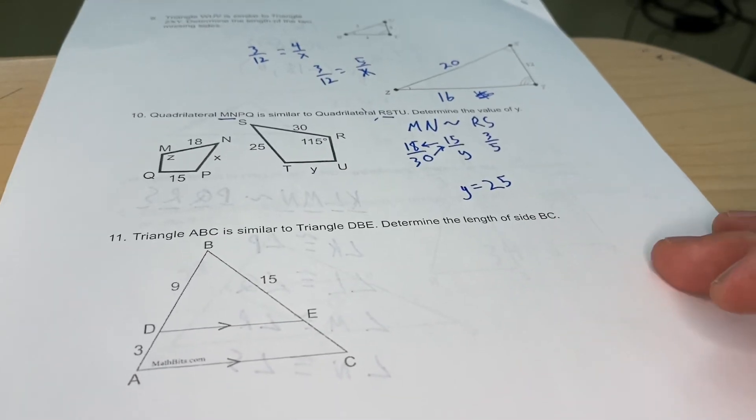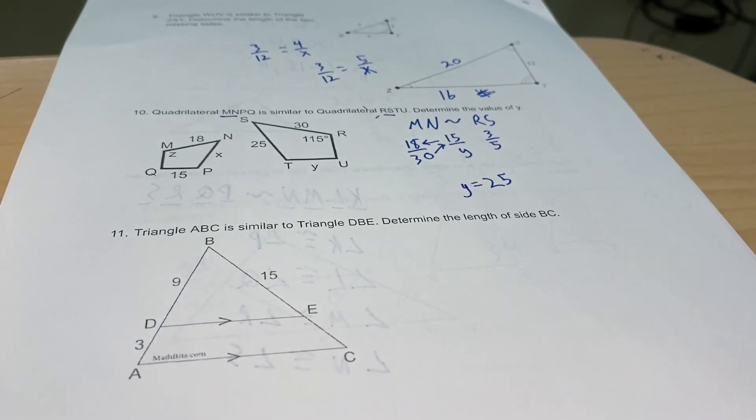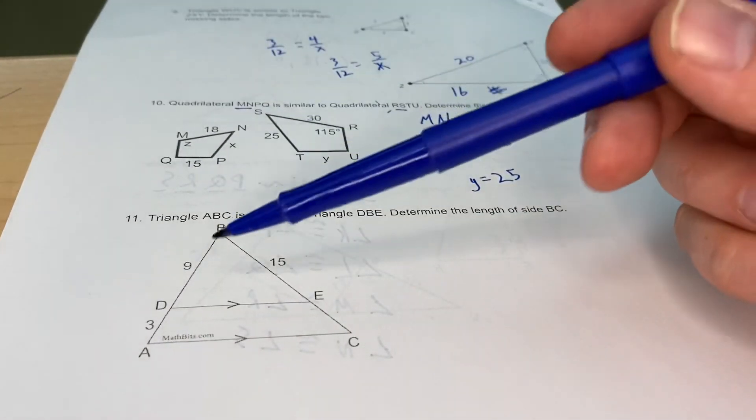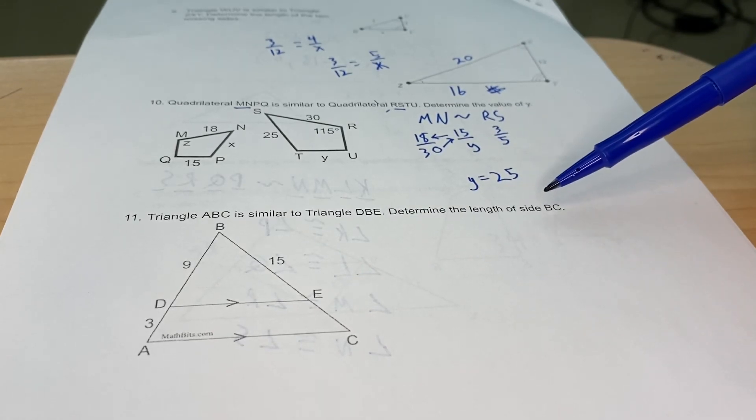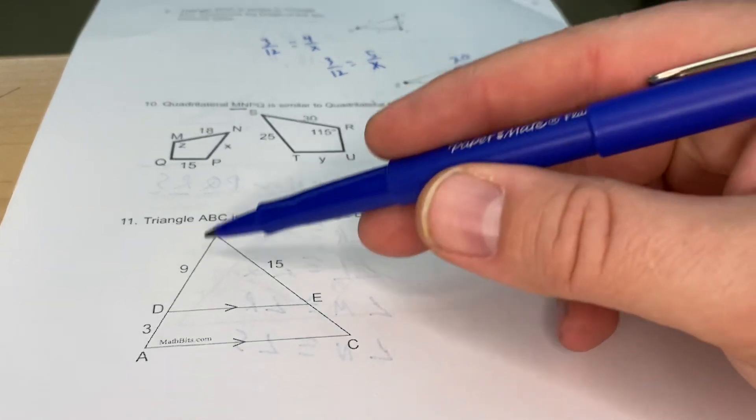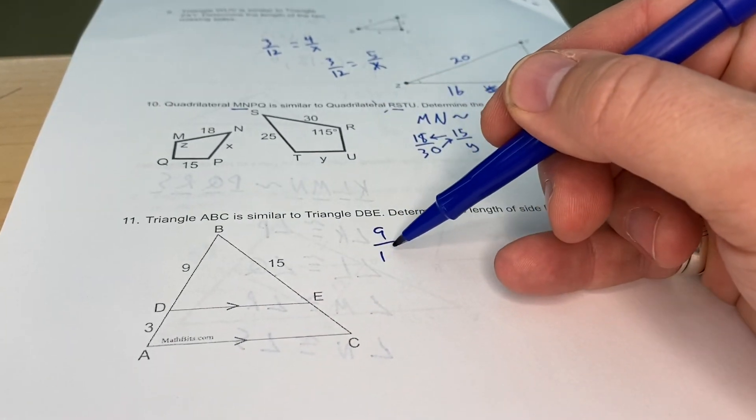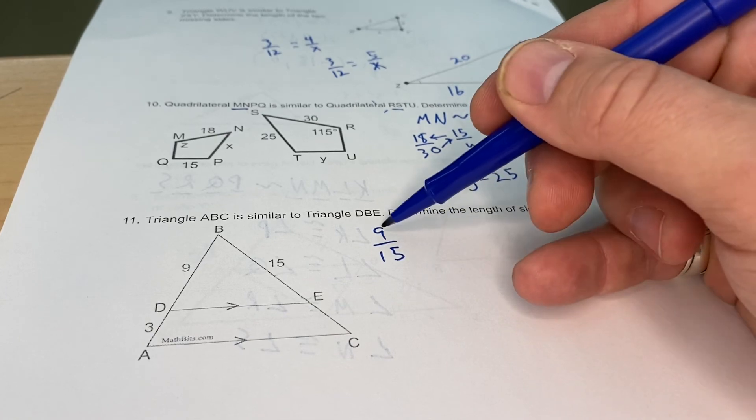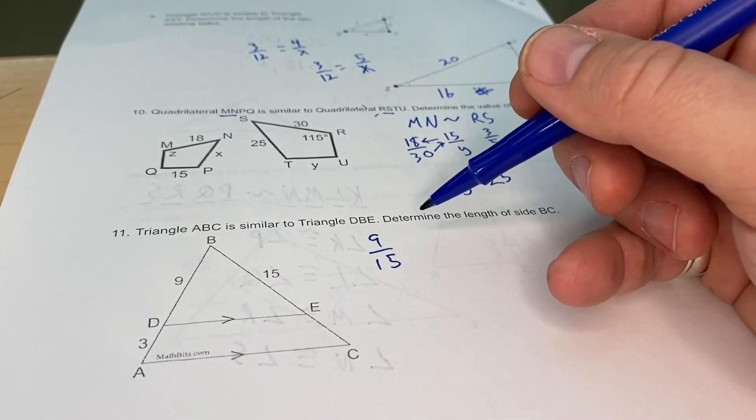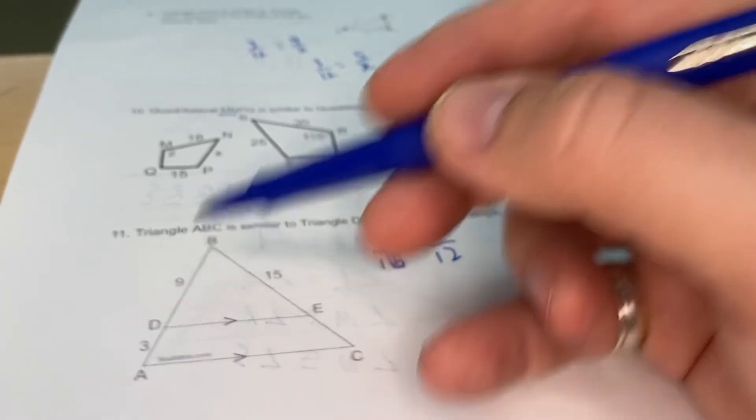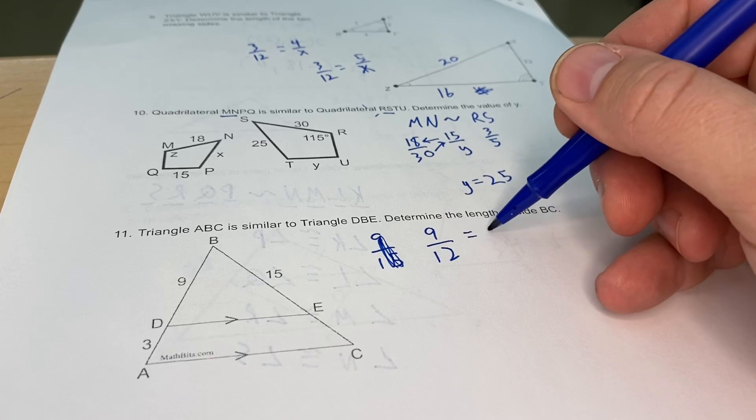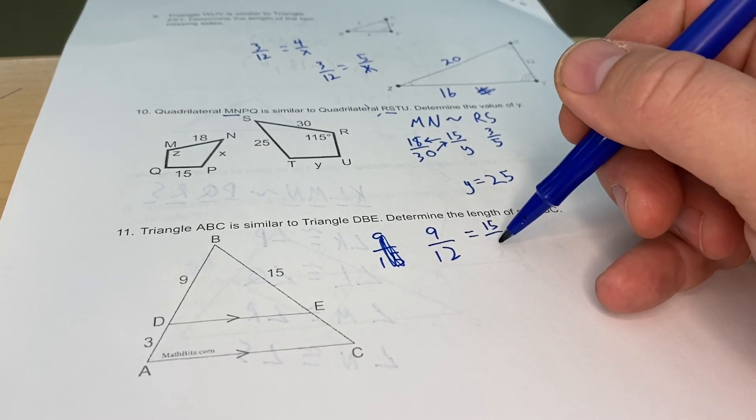On the last one here, a couple of different ways that you can work this. Triangle ABC, my large triangle, is similar to triangle DBE, my smaller triangle. Determine the length of side BC. I could say that 9 is to 15, that's my small triangle. Both of those actually, I shouldn't do that. Small to big, 9 is to 12, because I add this side is the same thing as 15 to, we don't know the size of that larger one. I could cross multiply, divide, work the whole thing out.